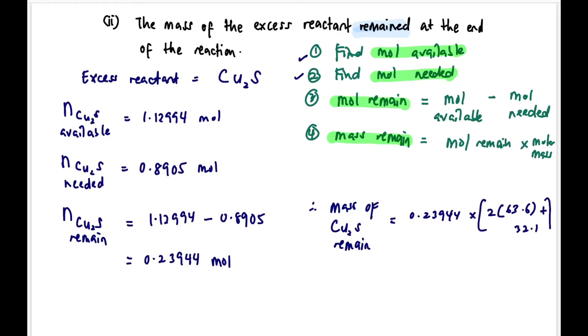Mass of Cu₂S remaining = mole remain × molar mass of Cu₂S = 38.14 grams. That is the mass of excess reactant remaining. Just follow these four steps.